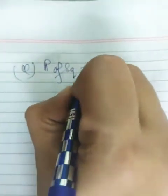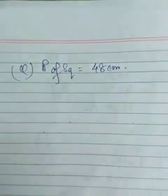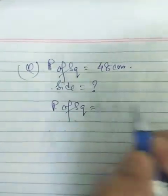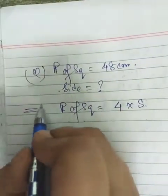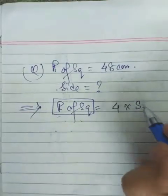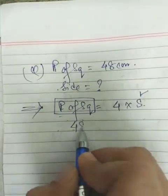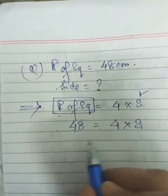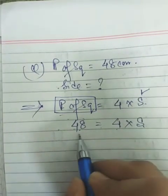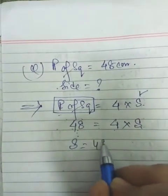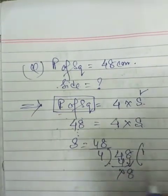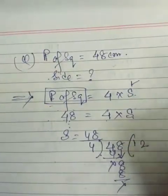Let us try one more sum. The perimeter of a square is given as 48 cm, and we have to find the side. We know that perimeter of a square = 4 into S. Here 4 will go to the other side as division: S = 48 ÷ 4. Dividing: 4 ones are 4, bring down 8; 4 into 8 is 2. So the answer is 12 cm — the side of the square is 12 cm.